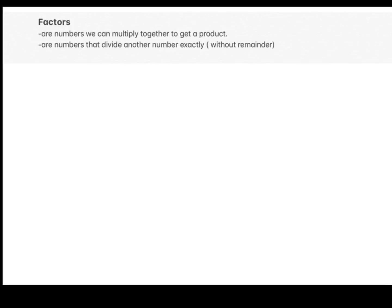Before we proceed to the definitions and examples of prime and composite numbers, it is important that we know first the concept of factors, which will be a keyword to the definition of prime and composite numbers. What are factors? Factors are numbers we can multiply together to get a product, and are numbers that divide another number exactly, or without remainder. Therefore, factors have something to do with multiplication and division.